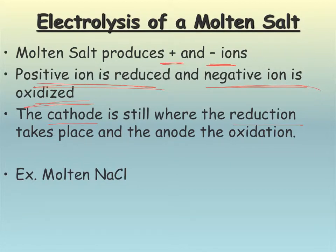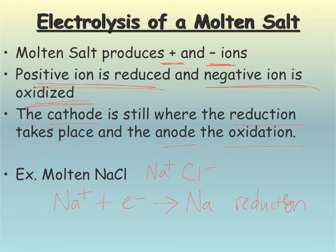The positive ion is going to be reduced. And your negative ion is oxidized. Again, cathode still reduction. Anode still oxidation. So if we took the case of molten NaCl, so basically I have Na pluses and Cl minuses running around in solution. My Na plus can gain an electron and become a sodium metal. So this is the reduction reaction.